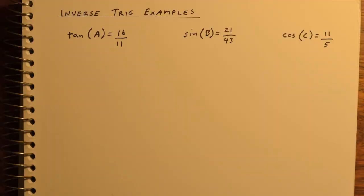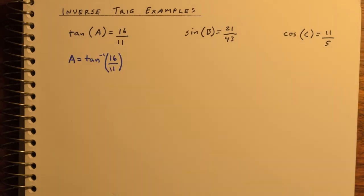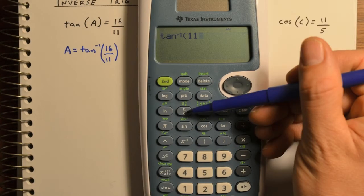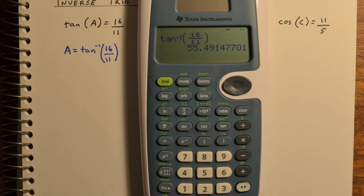So some examples here. Take a minute and jot these down. We'll work through them one by one. The first equation, we have tangent of angle A is 16 elevenths. So that means A is the inverse tangent of 16 elevenths. And so then pulling out your calculator, type second tangent 16 elevenths, which gives us about 55.49.